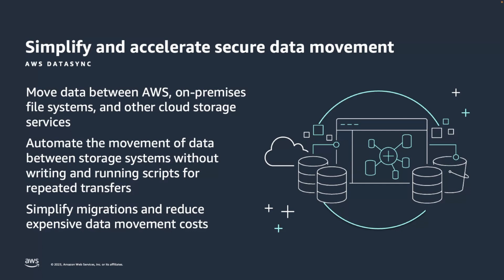AWS DataSync is a secure managed service that automates and accelerates the movement of data online between storage systems without the need to write and run scripts to manage your data transfers. With DataSync, you can access data from a variety of supported storage locations spanning on-premises, edge, and other cloud storage services, and then move it to and from AWS to support your business workflows and data processing.